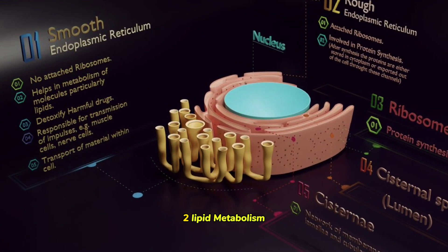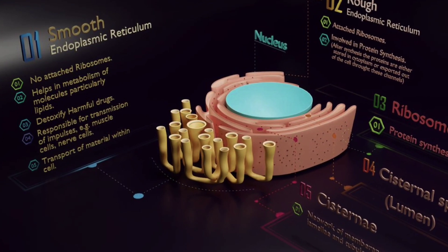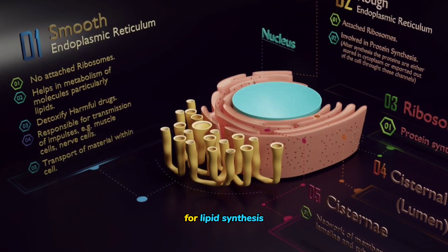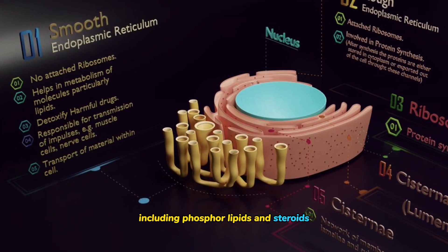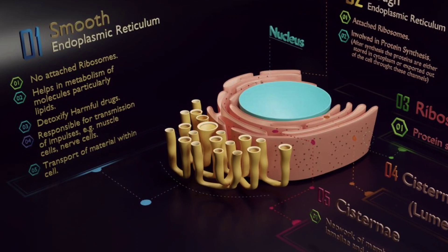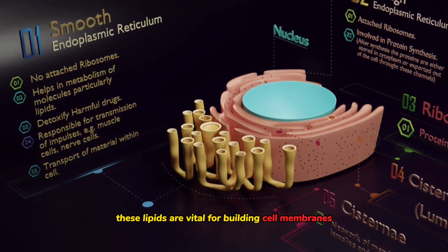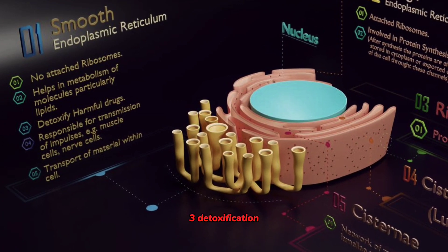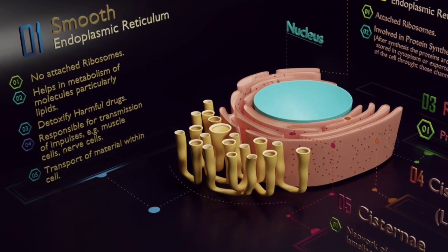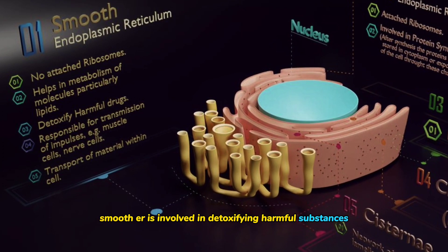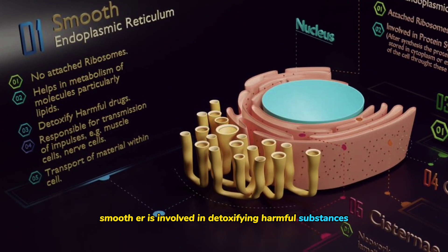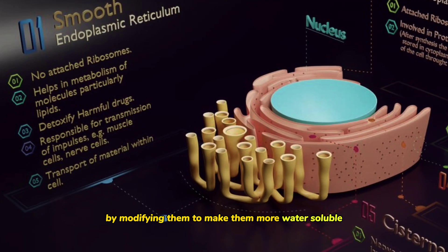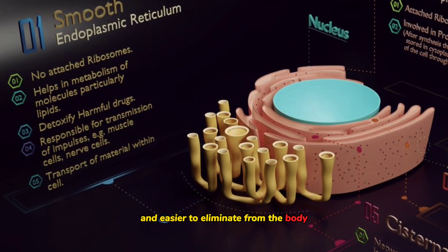The smooth endoplasmic reticulum is essential for lipid metabolism, including the synthesis of phospholipids and steroids. These lipids are vital for building cell membranes and other cellular structures. In the liver, smooth ER is also involved in detoxification — modifying harmful substances to make them more water-soluble and easier to eliminate from the body.